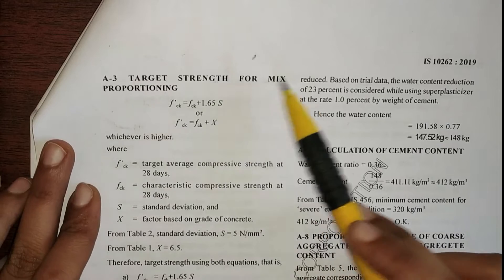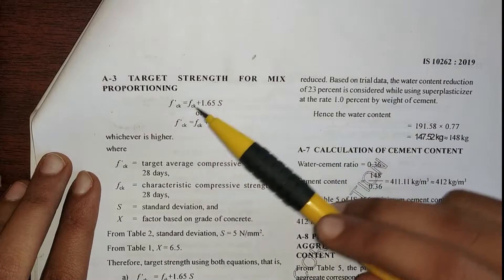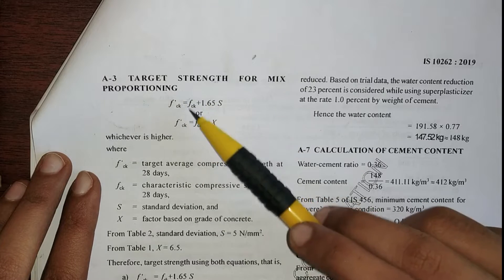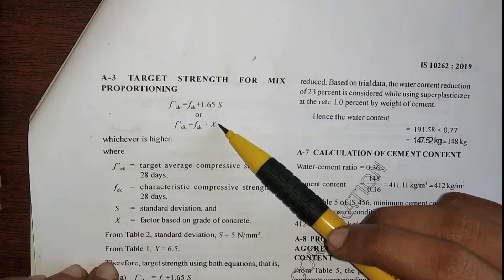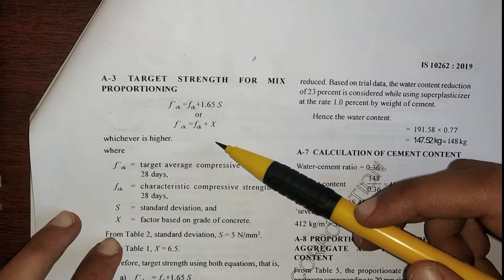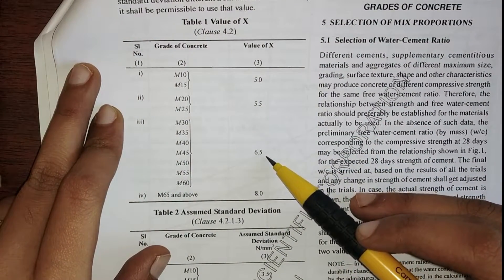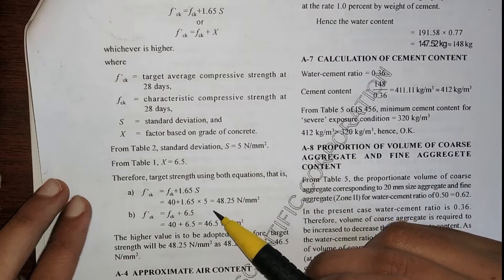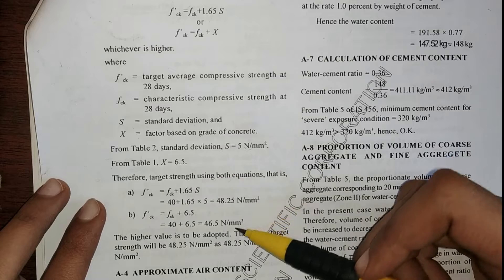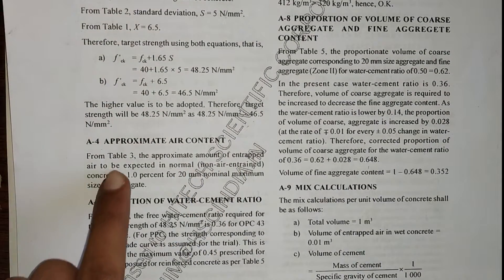The first step is target strength for mix proportioning. The target strength f'ck must be greater than the characteristic compressive strength fck. The formula is: f'ck = fck + (x × s), where s is the standard deviation and x is a factor based on the grade of concrete, found from Table 1 and Table 2. From Table 1, x for M40 is 6.5; from Table 2, s for M40 is 5. Substituting into the formula and taking the higher of the two values, our target strength is 48.25 N/mm².